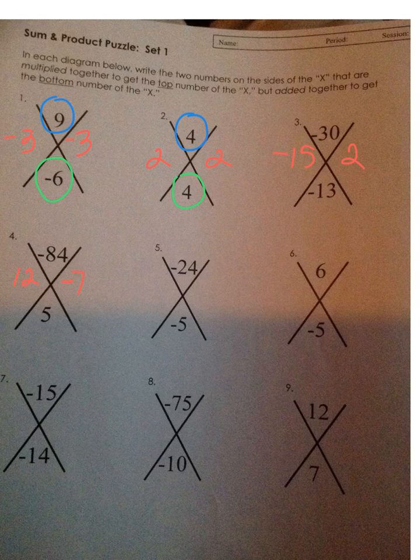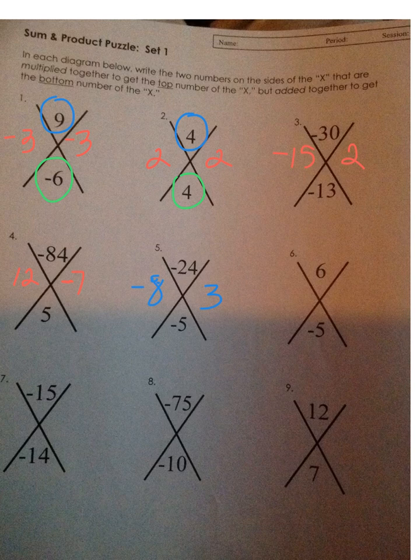What two numbers multiply to get me to negative 24 that add to get me to negative 5? I try 8 and 3, and if I do negative 8: negative 8 times 3 is negative 24, and negative 8 plus 3 will get me to negative 5.